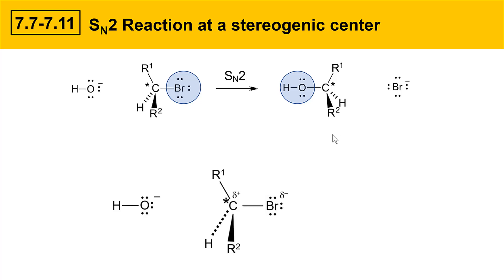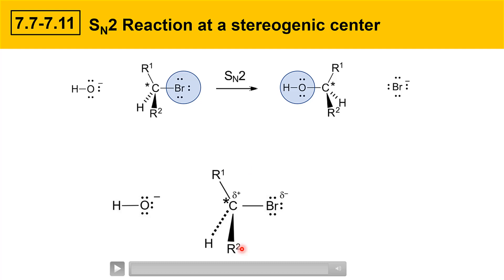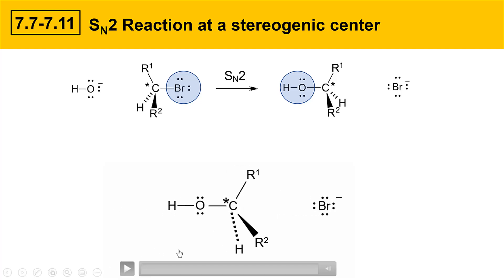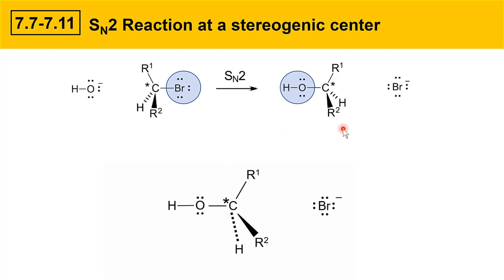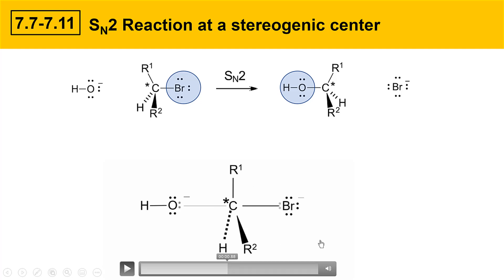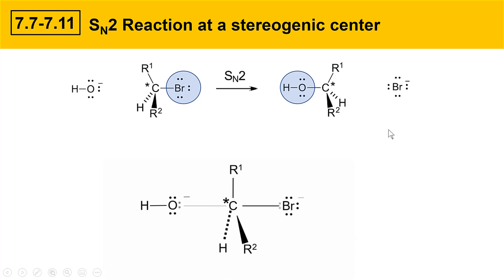Let's take a look at a video of this nucleophile coming in and attacking. In the process, R1 is going to bend this way, R2 is going to bend that way, and hydrogen is going to bend that way as the leaving group leaves — the groups on the carbon are trying to get out of the way of the approaching nucleophile. The end product ends up being inverted at the stereogenic center compared to where it started. In the middle, we have our transition state — the point halfway in between — and there's a trigonal bipyramidal geometry at that carbon.